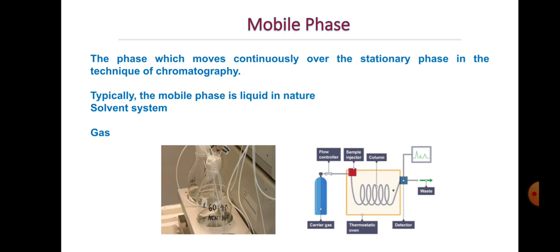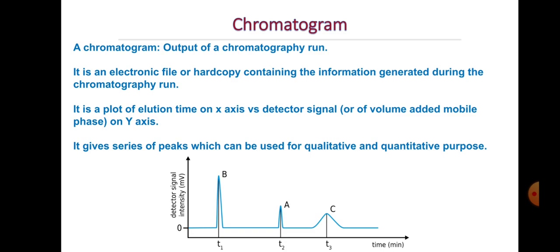The mobile phase moves over the surface of the stationary phase and carries along the analytes that have been loaded or spotted. Typically the mobile phase is liquid — usually a combination of different solvents, such as 60:40 acetonitrile-water used in HPLC. In gas chromatography, the carrier gas acts as the mobile phase from a pressurized tank.